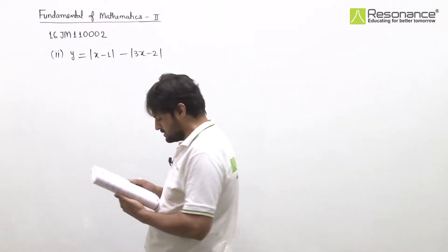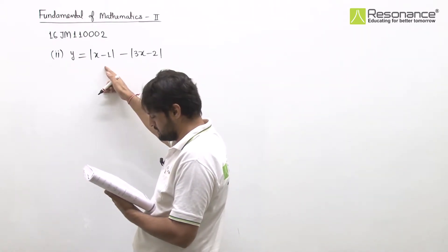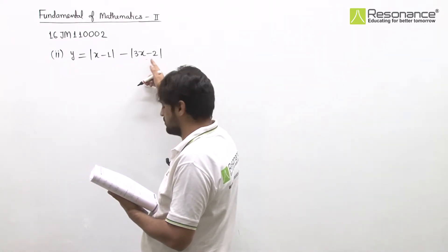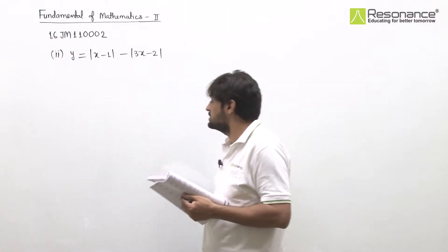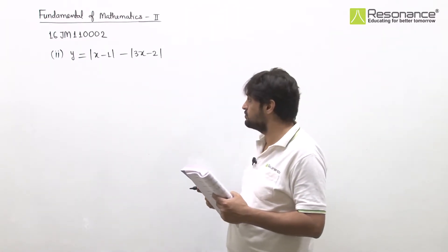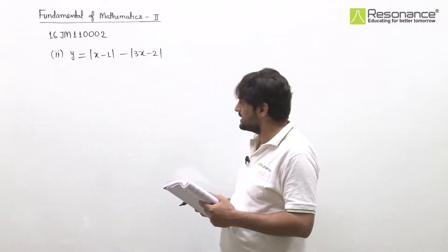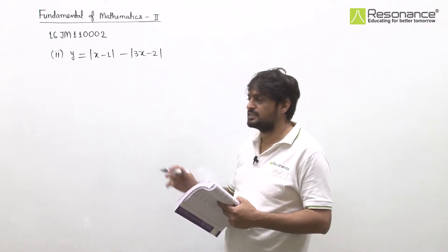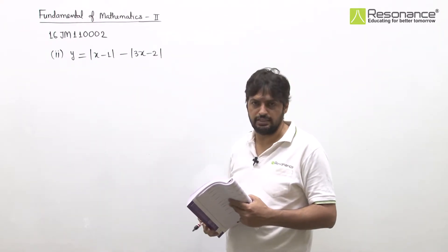In the second part, this is mod of x minus 1, minus mod of 3x minus 2. To graph this, we can either define it fully or directly check the turning points, since we haven't studied straight lines yet, so let's find the turning points directly.